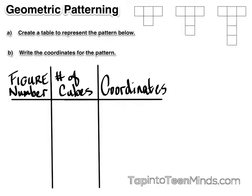When we take a look at the pattern, you'll notice we have three figures given to us. In the first figure, we begin with four cubes. So for figure one, we have four cubes, and our coordinate would be one comma four, noting that the figure number is one, the number of cubes is four.